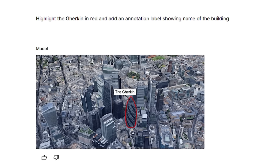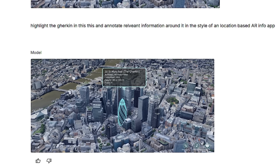If you'd like to stylise the annotations, you can try using a reference for a specific AR-looking style. I've written the prompt in the style of a location-based AR info app, and it has generated a nice information box with a styled coloured outline.